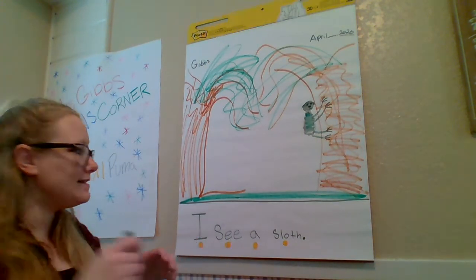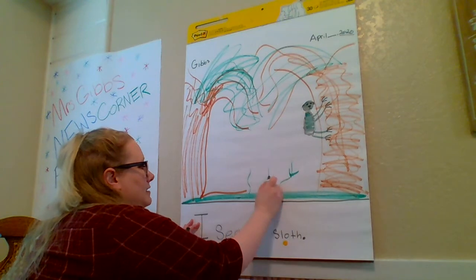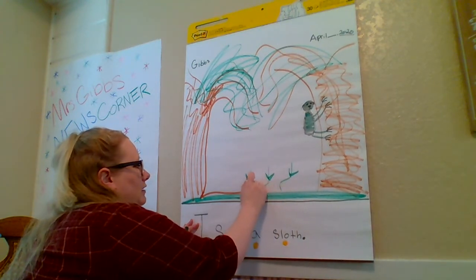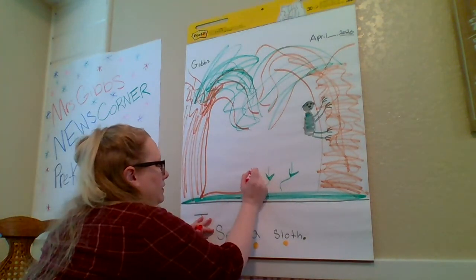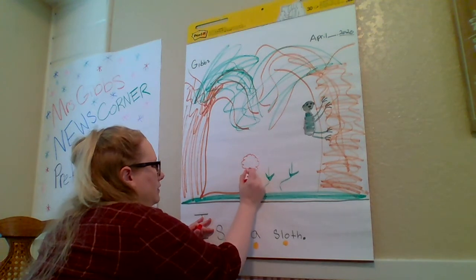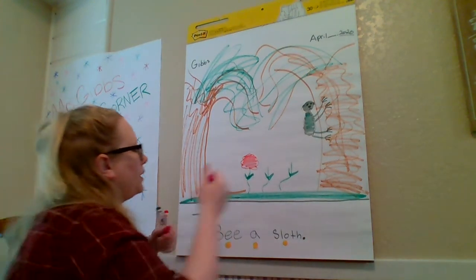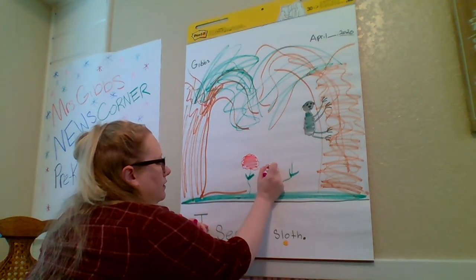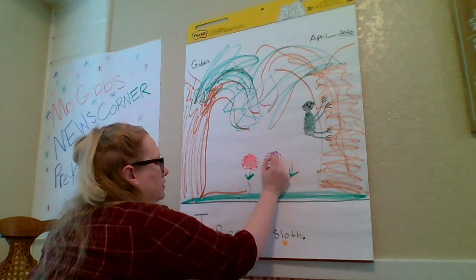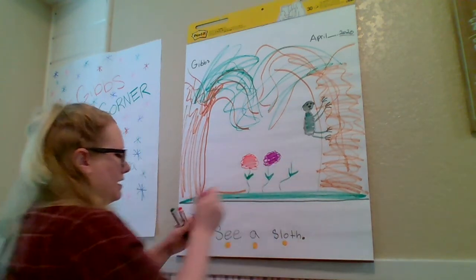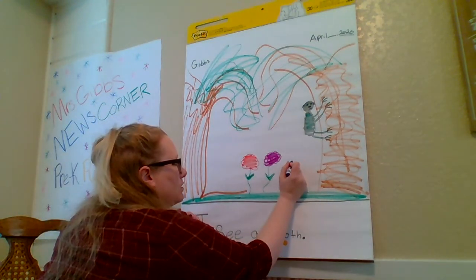Now in your picture, if you want to add some flowers you can, because there's lots of flowers in the rainforest. Let's draw maybe a red flower, maybe a purple flower, and then a pretty purplish-blue flower.